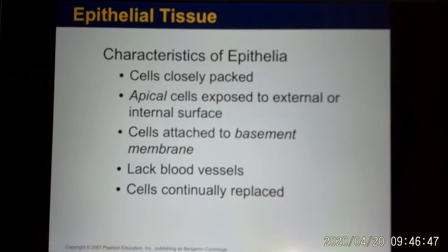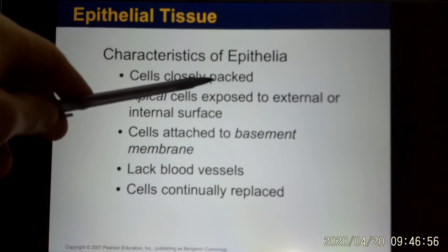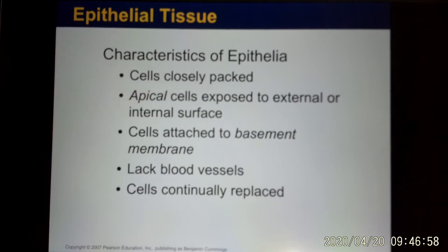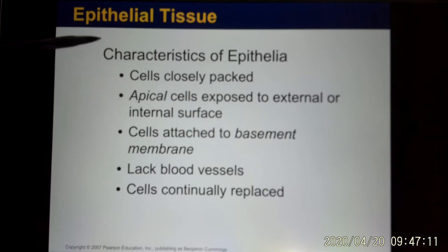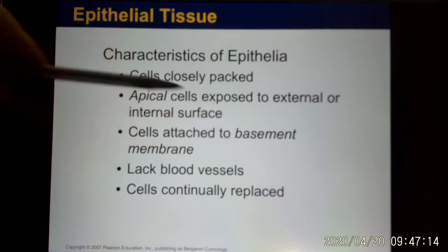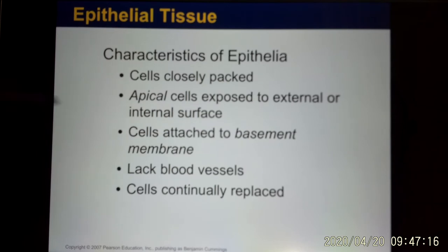The characteristics of epithelium: they have a lot of cells — think about your skin. These cells are tightly packed together. You don't want bacteria to leak between cells and get into your body. They are tightly packed and have an apical side that faces outside, and a basolateral side where they grow on the basement membrane.